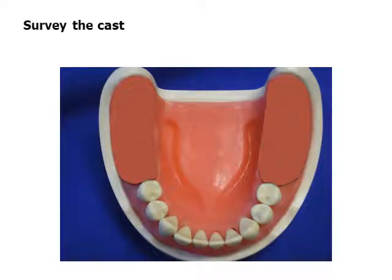The cast is surveyed to determine the path of insertion, to locate proximal tooth surfaces that are or can be made parallel, to identify areas of potential retention, to identify areas that will interfere with seating, and to identify areas which may impact the aesthetics of the partial denture.